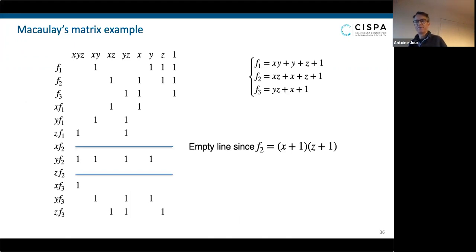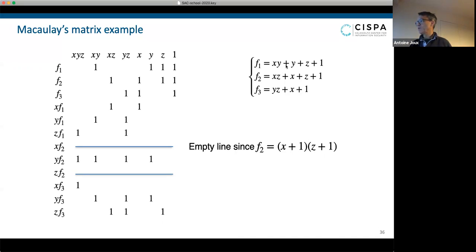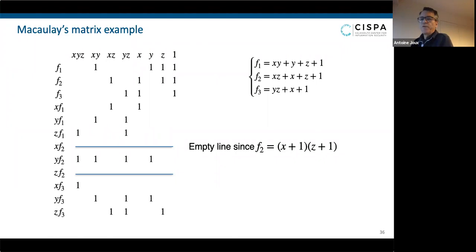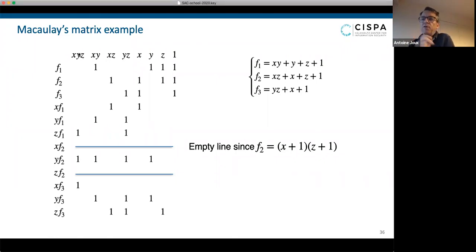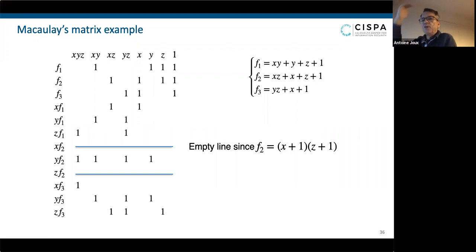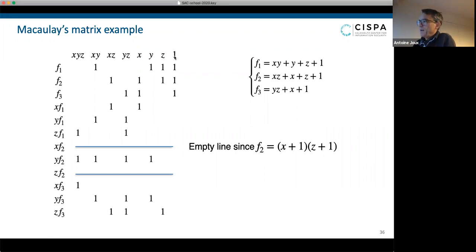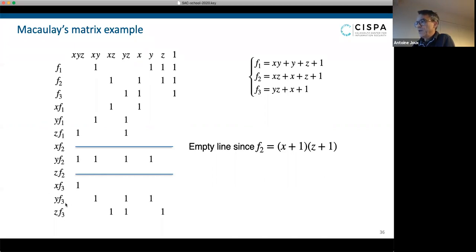Let's take a small example. I have three polynomials: f_1 = xy + y + z + 1, f_2 = xz + x + z + 1, and f_3 = yz + x + 1. I'm going to build the Macaulay matrix by going to degree 3. With three variables x, y, z and degree 3, the monomials are: 1, x, y, z, xy, xz, yz, xyz. These are the columns. For the rows I put f_1, f_2, f_3 and then multiply each by x, y, z: giving xf_1, yf_1, zf_1, xf_2, yf_2, zf_2, xf_3, yf_3, zf_3.